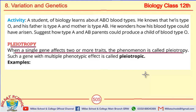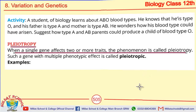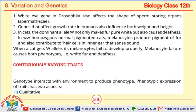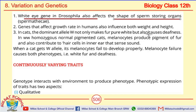A pleiotropic gene has multiple phenotypic effects — one gene with more than one phenotypic outcome. The first example is the white eye gene in Drosophila, which also affects the shape of sperm-storing organs. So one gene controls multiple traits. In humans, one gene can control growth rate, weight, and height. Such a gene is called a pleiotropic gene.